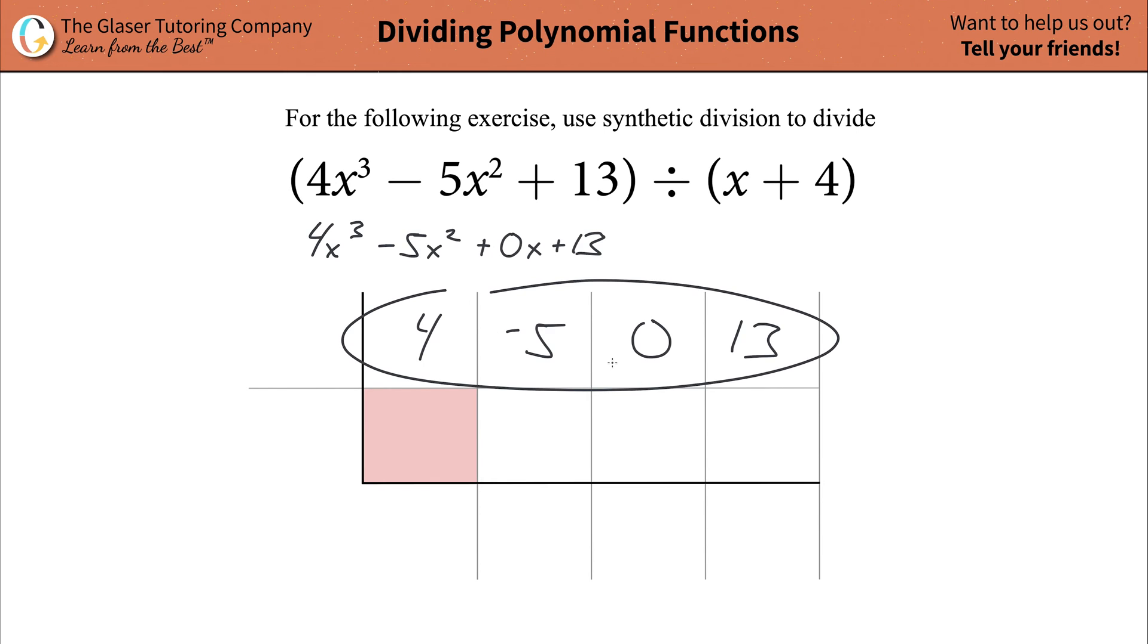So once we have our coefficients up here, the next thing to do is then to look at your divisor. Your divisor is always going to be found to the right of that division symbol. And what you're going to do is you're going to set your divisor, whatever it is, equal to zero. And then you're going to solve it for x. In other words, what you're doing is you're going to solve for the zero value of this polynomial function. In other words, you're going to solve for the x value that makes this thing go to zero.